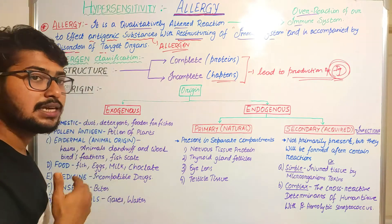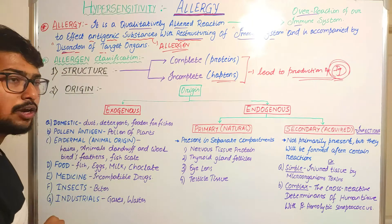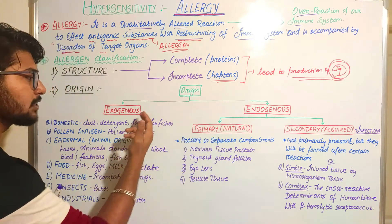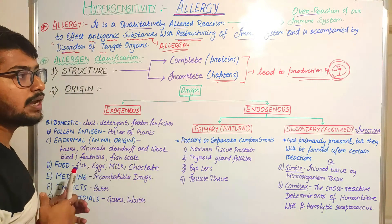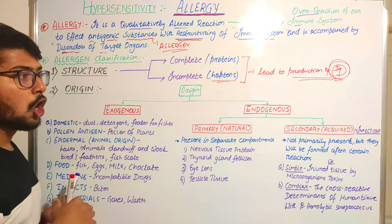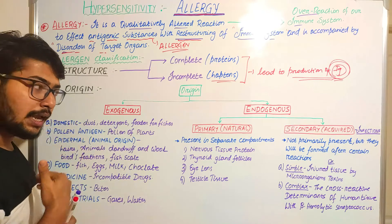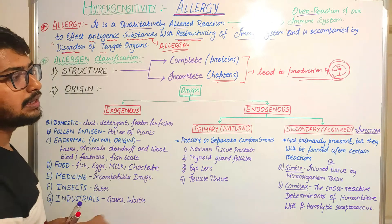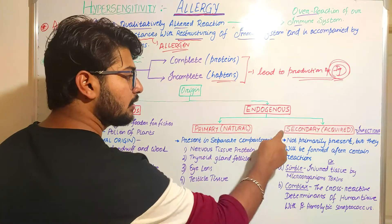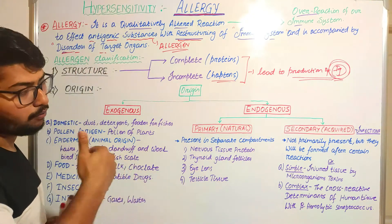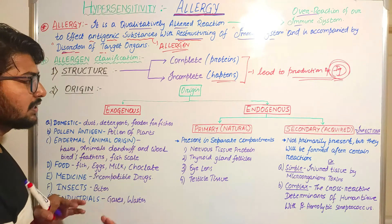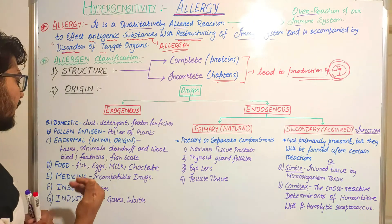According to origin, allergens are divided into exogenous and endogenous. Exogenous means allergens present in our surroundings; endogenous means allergens or potential allergens present inside our body. Endogenous allergens are further divided into primary or natural, and secondary or acquired endogenous allergens.